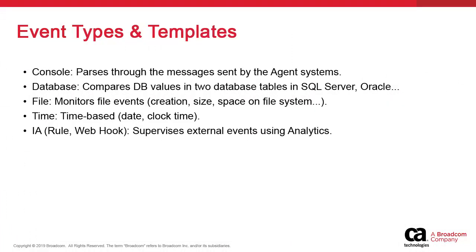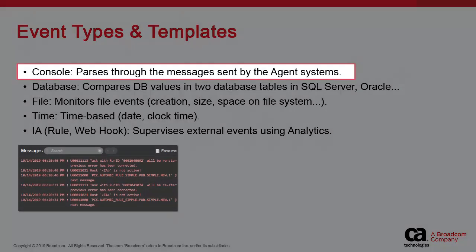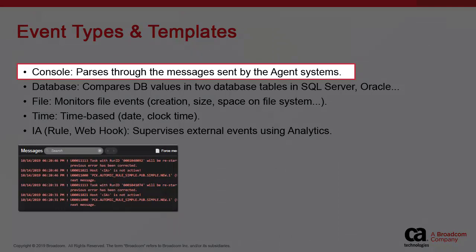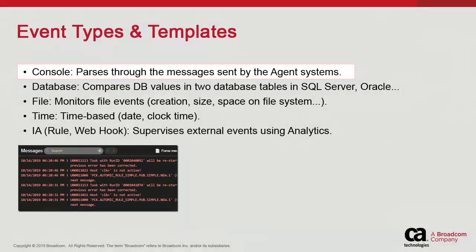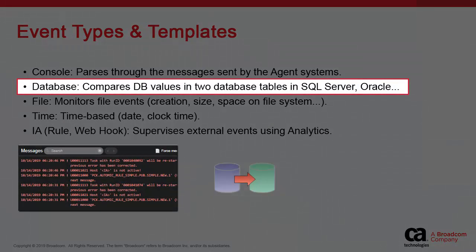Here we provide a quick outline of the various event types that Atomic Automation is able to watch for. The first is the console. On each system, we find an agent which sends console messages back to the engine server each time an event occurs, like a failed job or a non-responsive agent. The console object can parse through these messages and triggers when specific text strings are found.